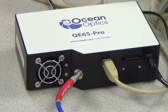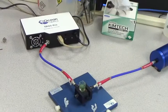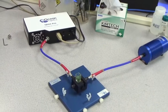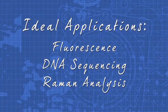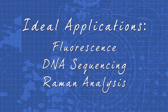The QE65 Pro offers high sensitivity and low stray light performance. This makes it ideal for a wide range of low-light applications such as fluorescence, DNA sequencing, and Raman analysis.